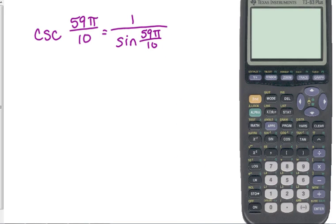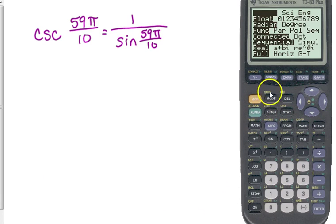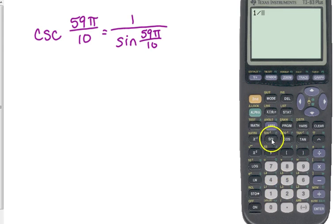If I were to ask you about an angle that is not on the unit circle, for example, 59π over 10, we don't have any over 10 angles on our unit circle. So you're going to have to rely on your calculator for this. First of all, I mentioned that cosecant does not have a button on your calculator, so you're going to have to express that as 1 over sine. You need to make sure that your calculator is in radian mode. The mode button is beside the second. Press mode, scroll down, make sure radian is highlighted.